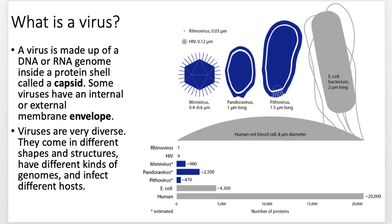A lot of viruses that infect higher-order organisms like mammals will have a phospholipid bilayer on their outer surface — that's called an envelope, and it sits on top of the actual capsid itself. Not all viruses have phospholipid bilayers. Plant viruses typically don't have them because they don't need them — plants have their inner phospholipid bilayer and then a cell wall on the outside, so viruses need to get through that cell wall and don't rely on one.